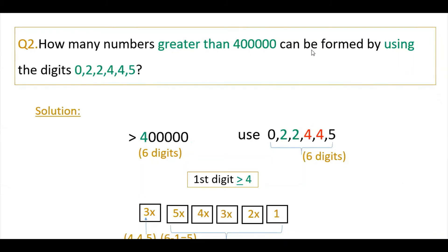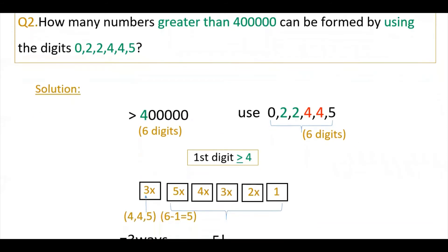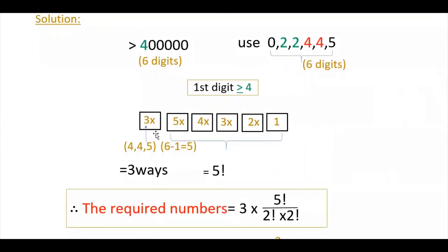The second problem: how many numbers greater than four lakh can be formed by using the digits 0, 2, 2, 4, 4, 5? The number should be greater than four lakh, so the first digit should be greater than or equal to 4. The digits greater than or equal to 4 are: 4, 4, and 5 — so three numbers. In the first box, you can write any of these three digits, giving 3 ways.